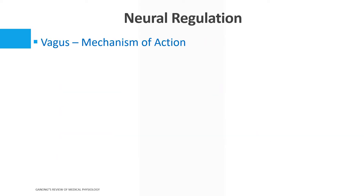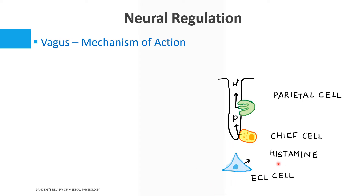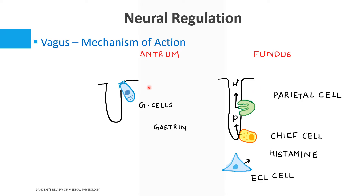We'll discuss how the vagus nerve acts on the parietal cells to increase gastric acid secretion. In the oxyntic glands of the stomach, we have the parietal cell secreting H+, the chief cells secreting pepsinogen, and the enterochromaffin-like cells secreting histamine. In the antrum we have pyloric glands, with G cells secreting gastrin and D cells secreting somatostatin.